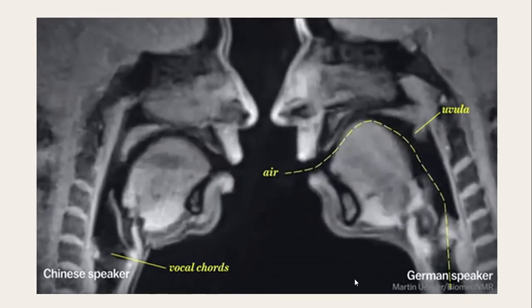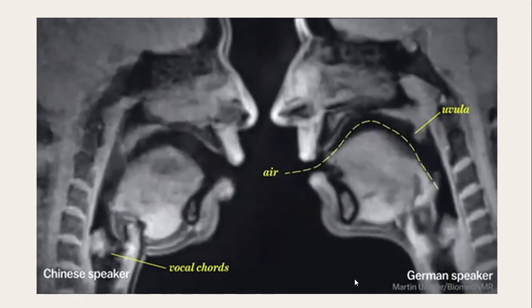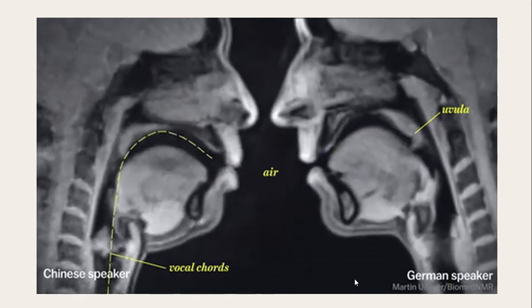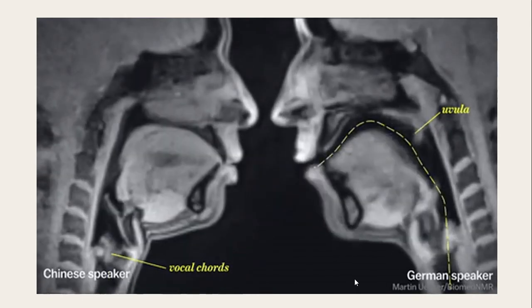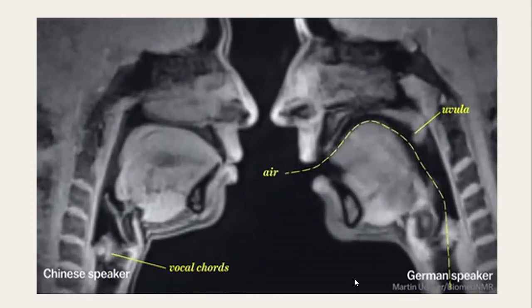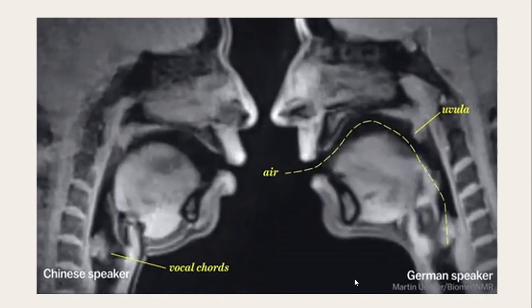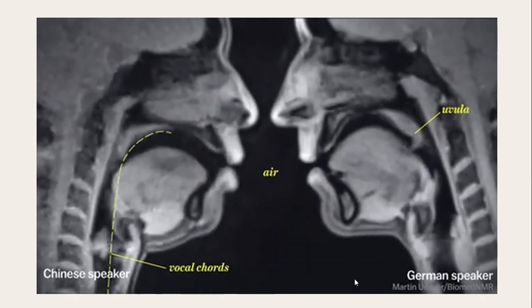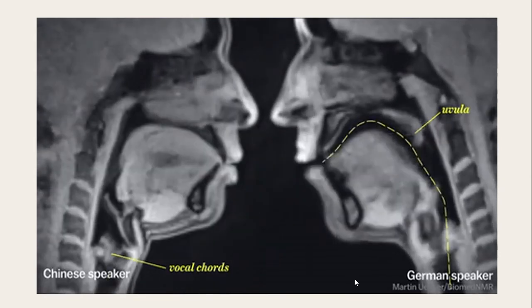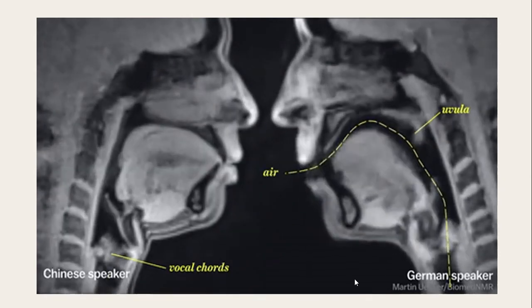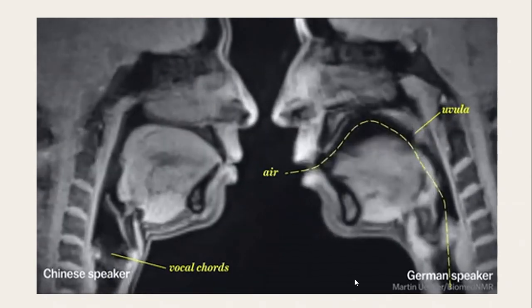You could see in this video how the positions of the tongue move when a German and Chinese speaker are conversing with each other.